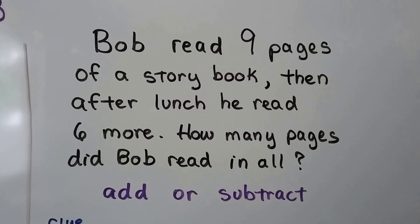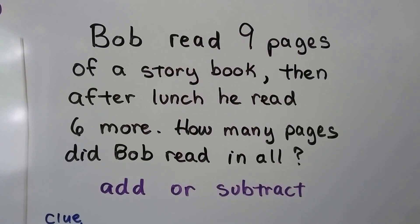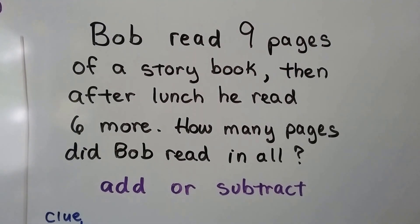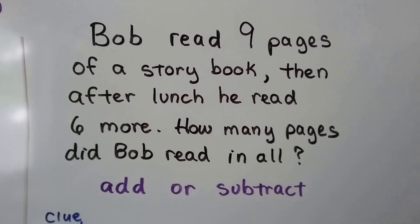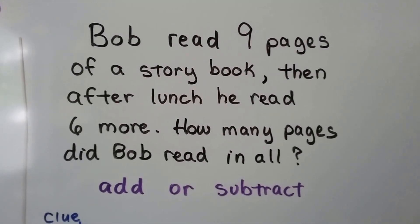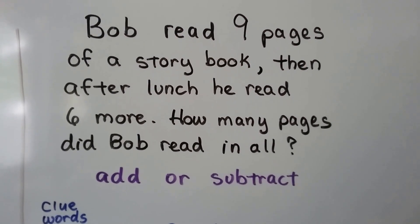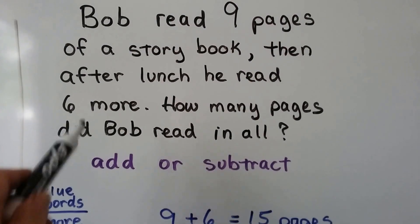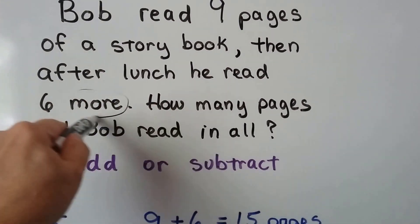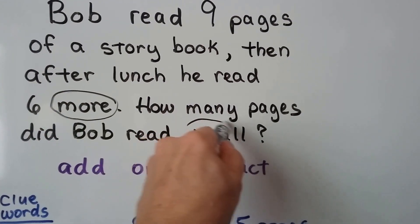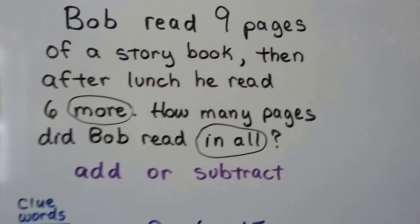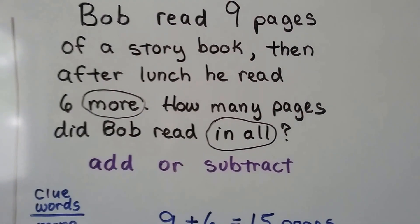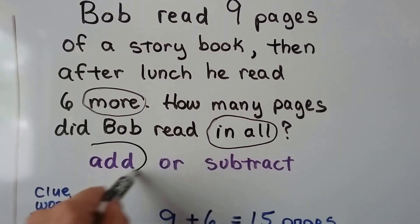Bob read nine pages of a storybook. Then after lunch, he read six more. How many pages did Bob read in all? So our clue words are more and in all. It says he read more, and then it says in all. Well those are clue words for addition,